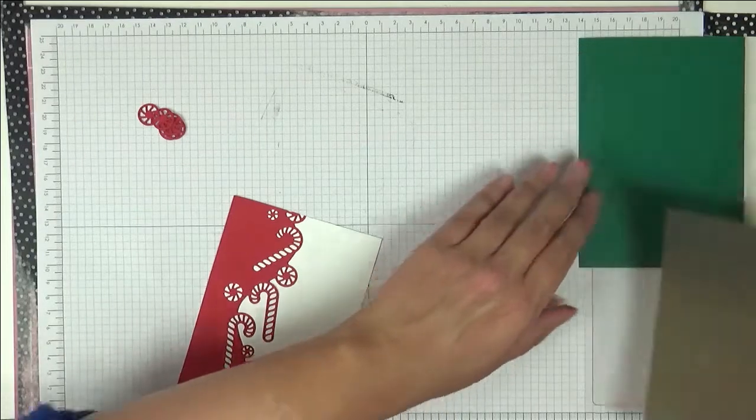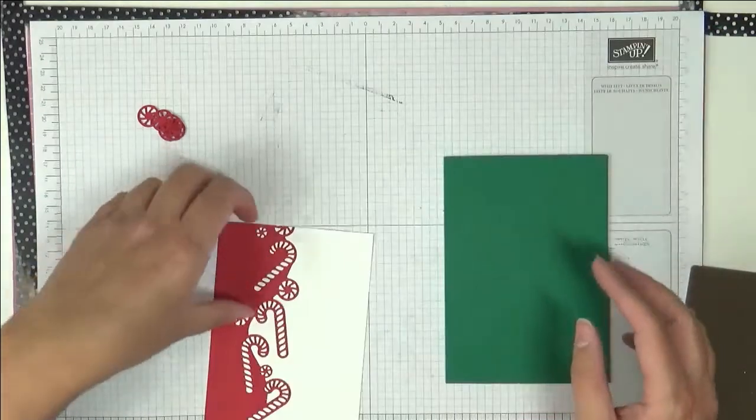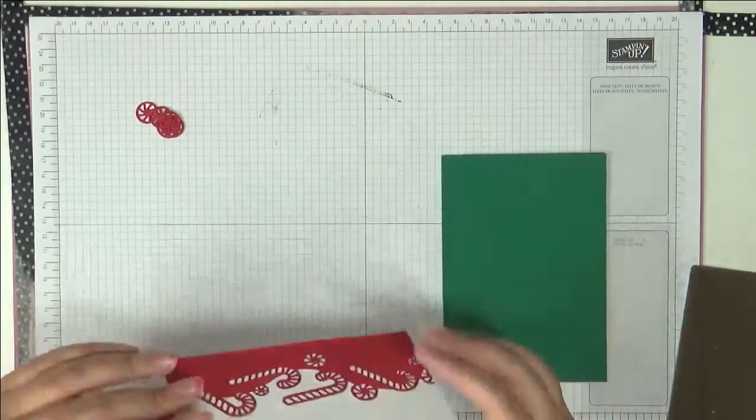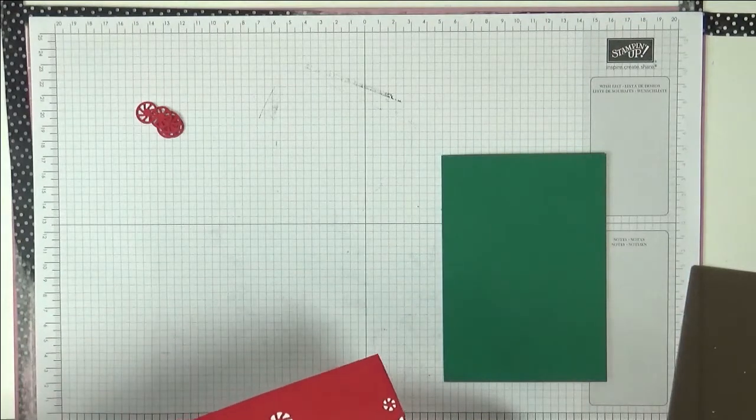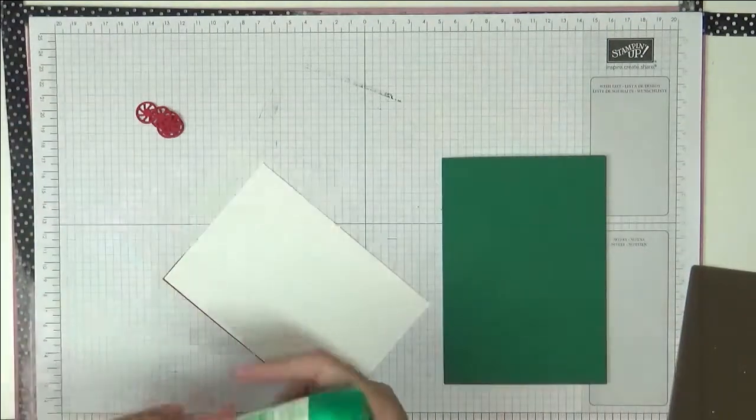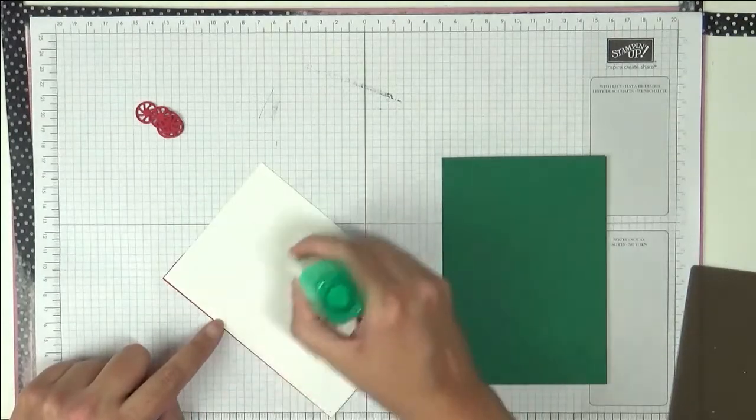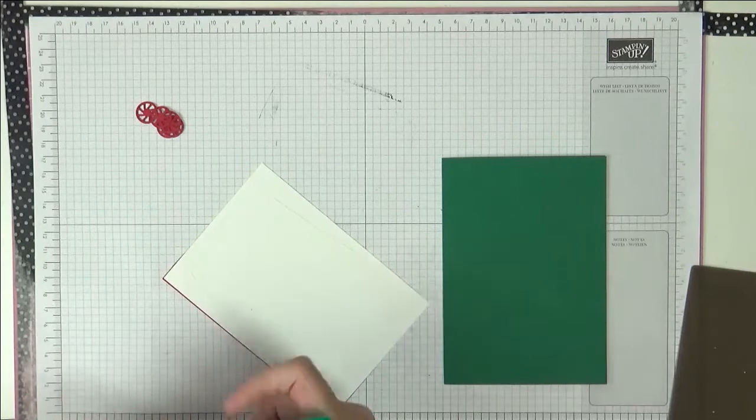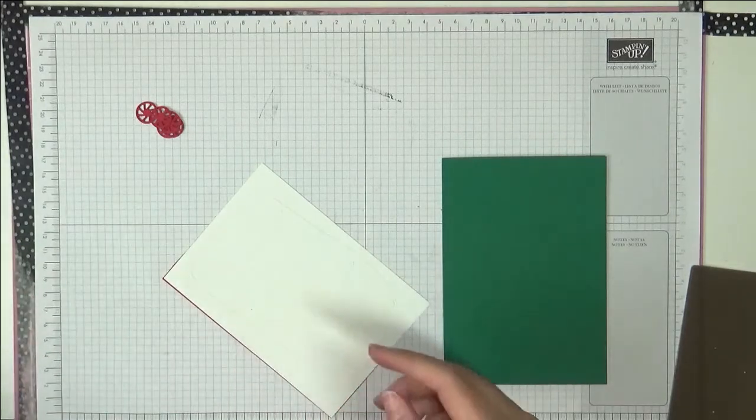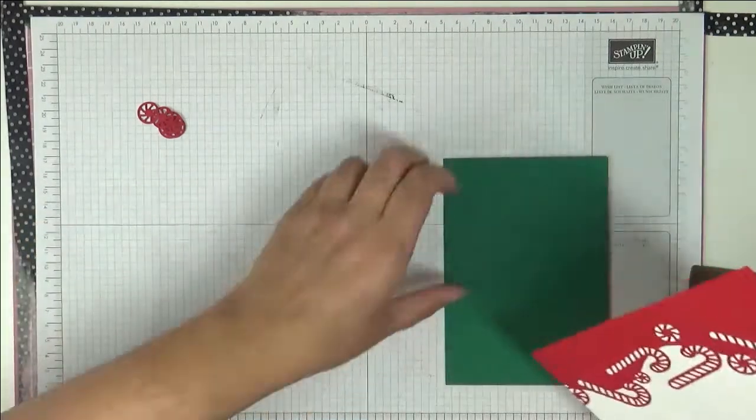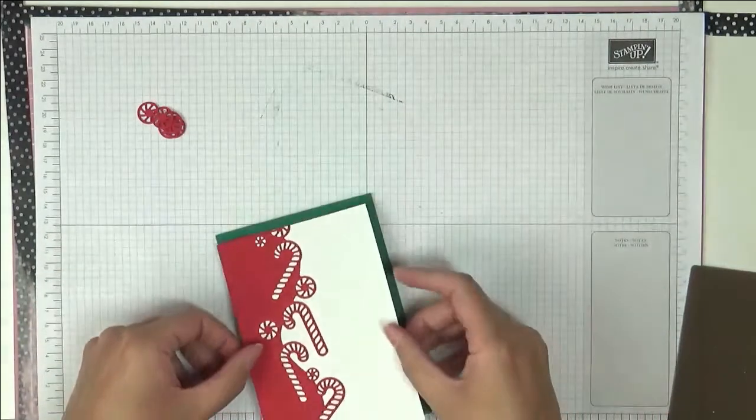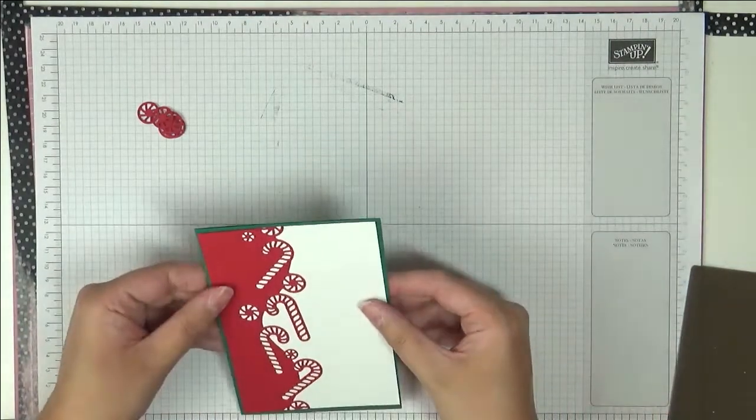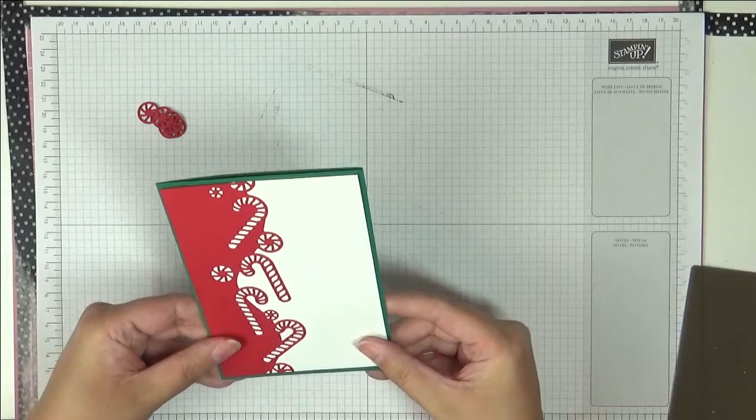Now we can stick everything down to our card base which is Shaded Spruce. This is a Shaded Spruce A6 card base, so that's an A4 sheet cut in half and then folded in half. I'm just going to stick down our piece to that with some Tombow because that's what I've got handy. Just stick it down like that.